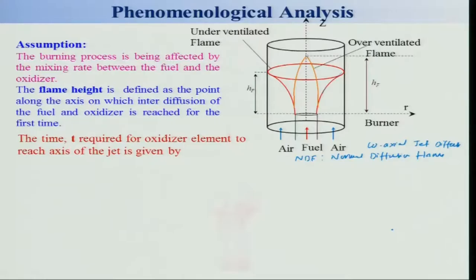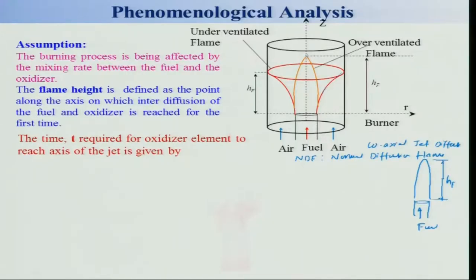We are considering a simple diffusion flame — a single jet of fuel issuing into a quiescent atmosphere — with a flame height h_f. Along the z direction (jet axis) and r direction (radial), the flame length can be defined as the time it takes for the oxidizer element to reach the axis of the jet for the first time. The time t required for the oxidizer element to reach the axis of the jet gives us the flame length.